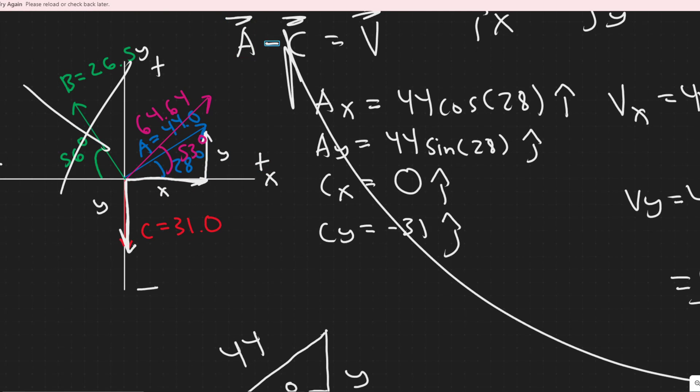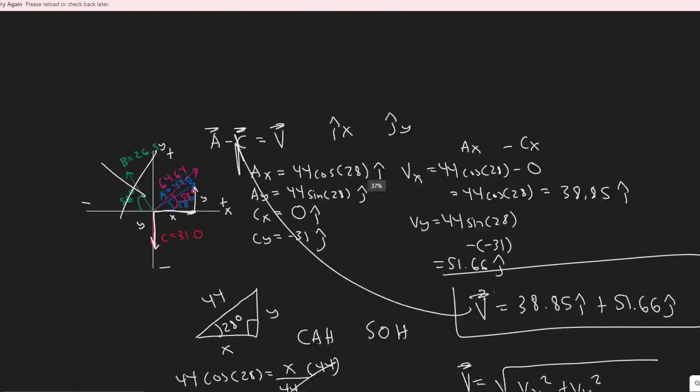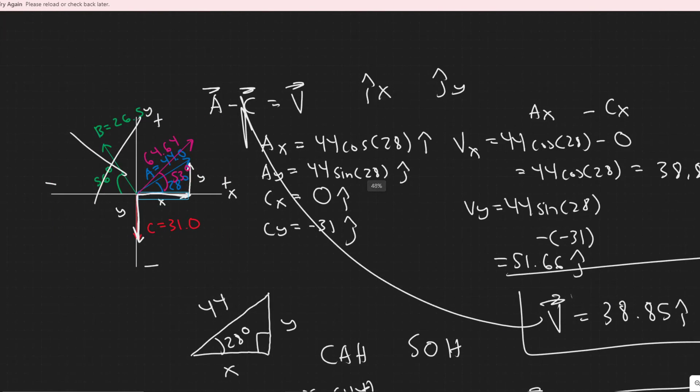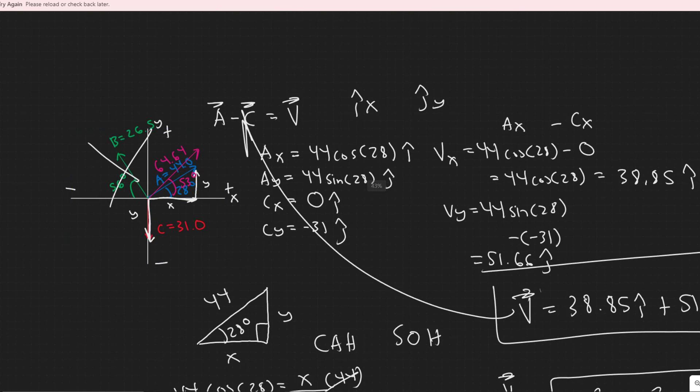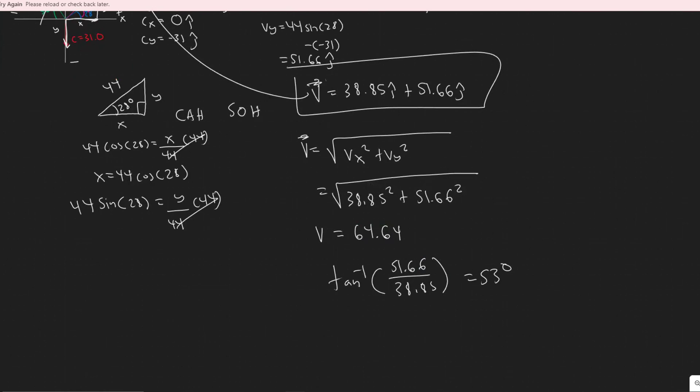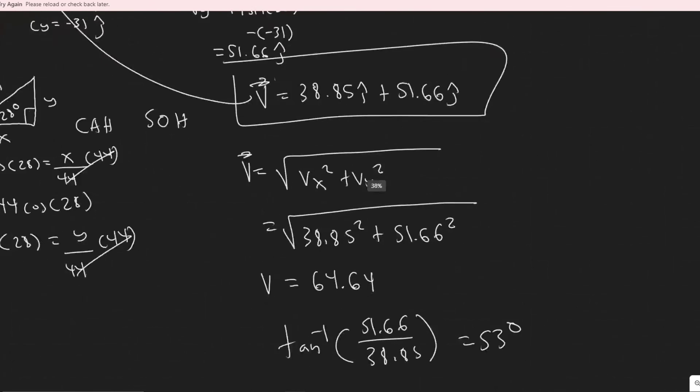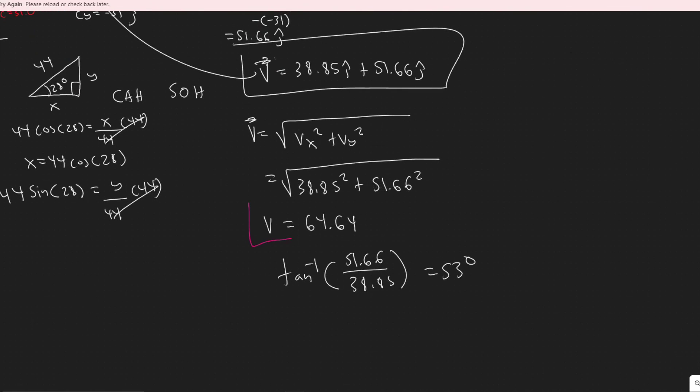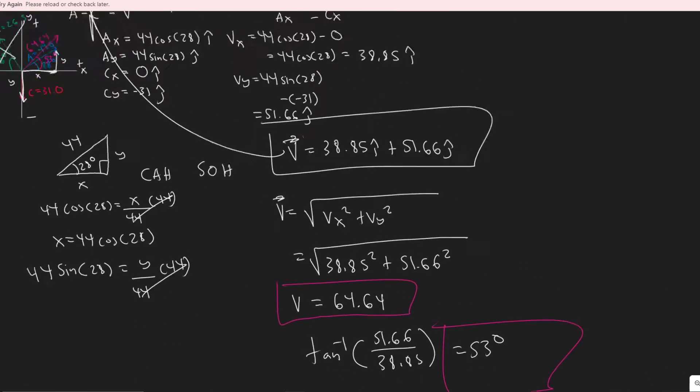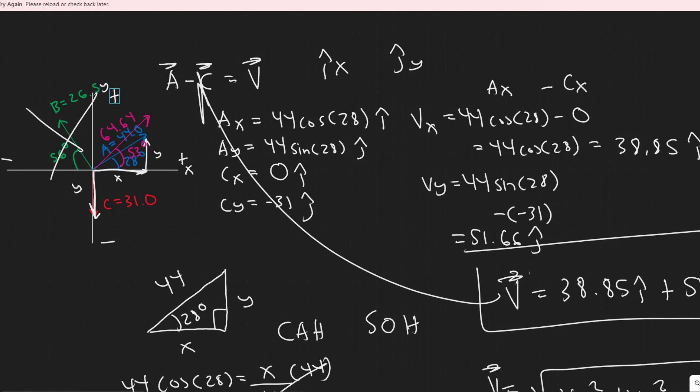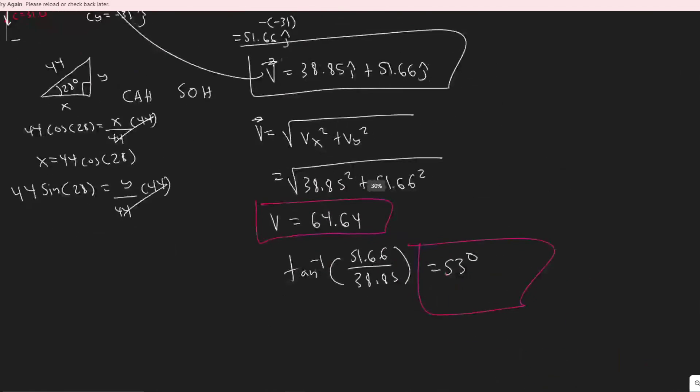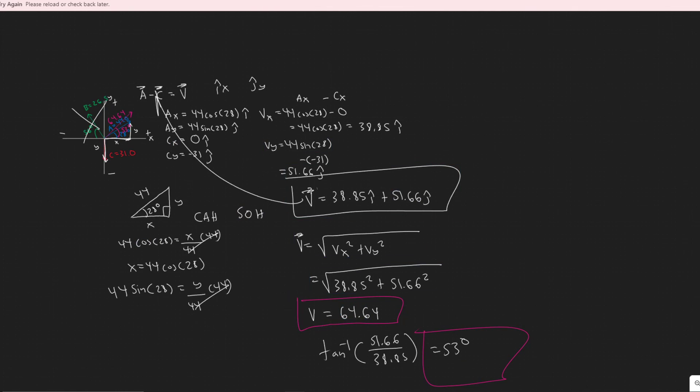So that's what this vector A minus C would be equal to on the graph. This would be its component form. So 38.85 in that direction, and then 51.66 upwards. So they didn't actually say how they wanted you to write it, but there's it on the graph, there's it in its component form, and then this would be its magnitude, and then the direction is right here. So you would say 53 degrees above the horizontal, in the x and y positive. But yeah, so that's gonna be your answers, and hopefully you found this video useful.